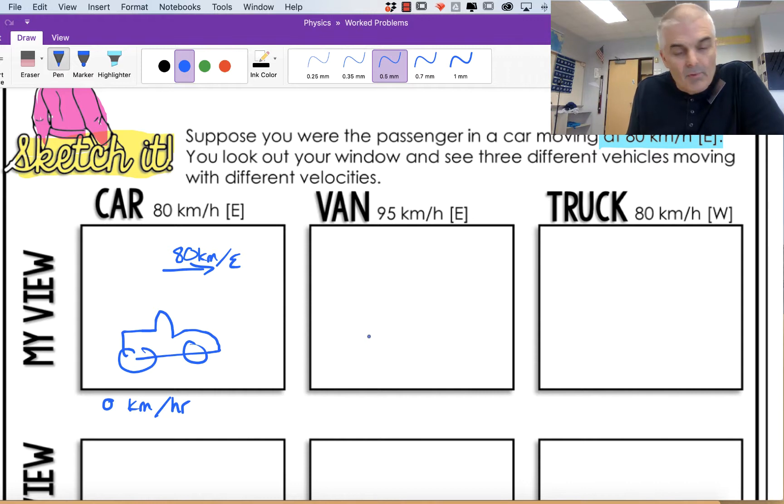Now what about from the perspective of a van that's moving 95 kilometers to the east? So here is my car moving at 80 and then the van is moving at 95. Think about this for a moment. The van is going faster than yours, so from the perspective of the van, you are going 15 kilometers per hour to the east because he's only going 15 kilometers per hour faster than you.